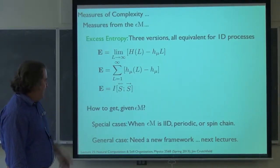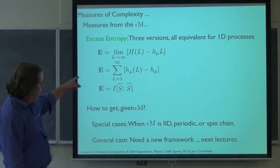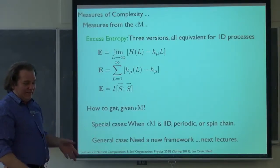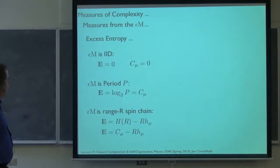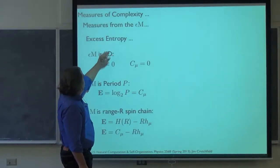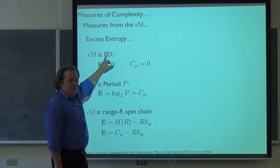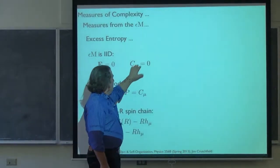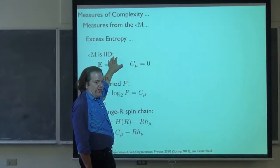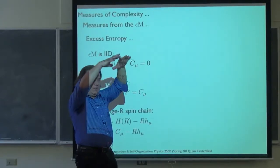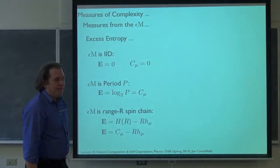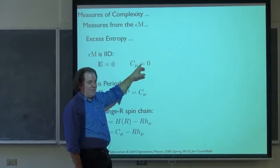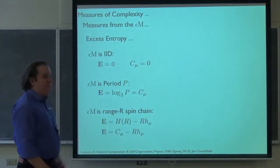The punchline is going to be that other than special cases where we know the relationship between excess entropy and statistical complexity — past-future mutual information compared to internal stored state information — we have to introduce some more techniques. For the excess entropy, we argued that all IID processes have zero excess entropy. All IID processes generate some kind of full binary tree with one kind of morph, so there's actually just one causal state. Since we're always in one causal state, the state information is zero. So for all IID processes, these two quantities are the same and zero — memoryless.